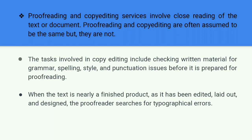This process of copy editing is also known as revision or sub-editing. When the text is nearly a finished product — it has been edited, laid out, and designed — the proofreader searches for typographical errors. The proofreader works with a copy of the finished product, or a proof, as the name indicates. Proofreaders don't suggest any kind of major changes to the text; rather, they look for minor text and formatting errors and confirm the material is ready for publication.